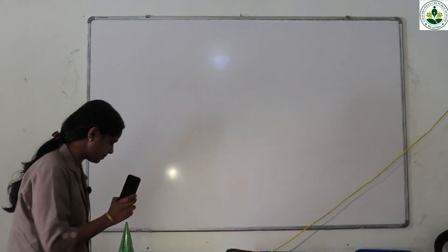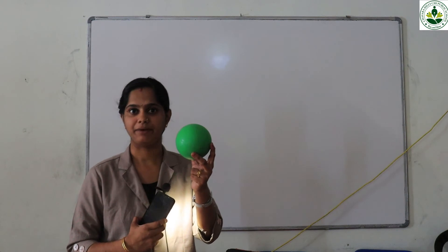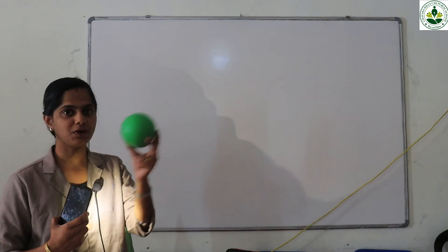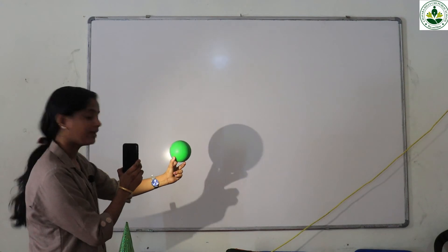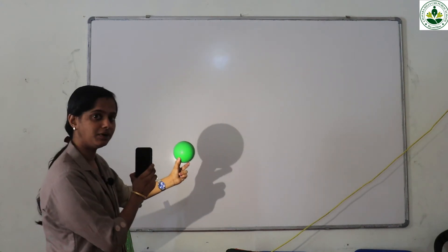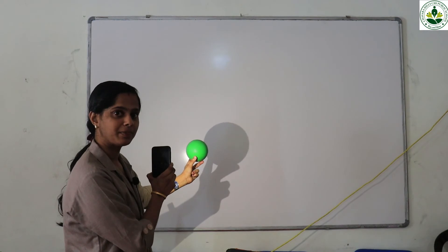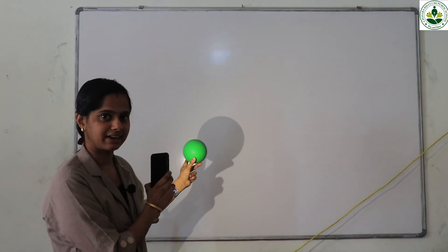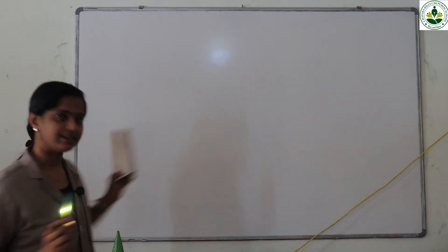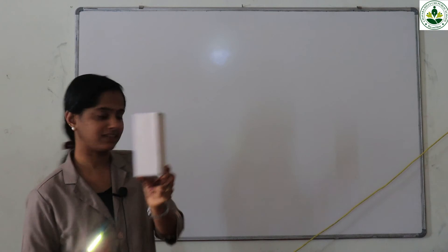The next solid shape is a sphere. We can check the shadow of this sphere. Can you see the shadow? Students, tell me which shape do you see. It looks like a circle. Next, this is a cuboid — we can check its shadow too.